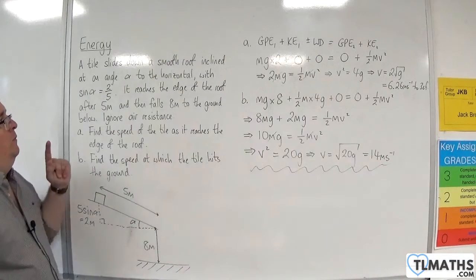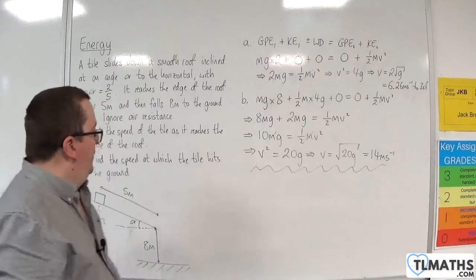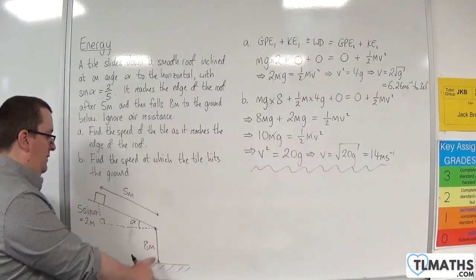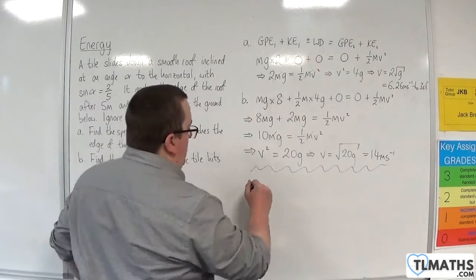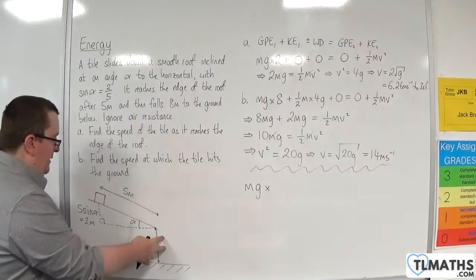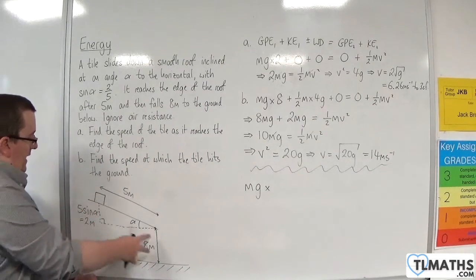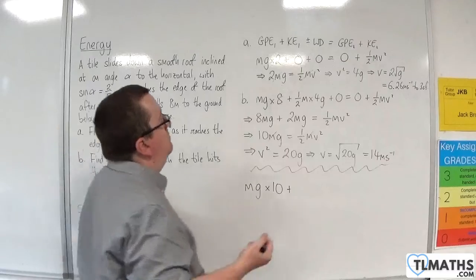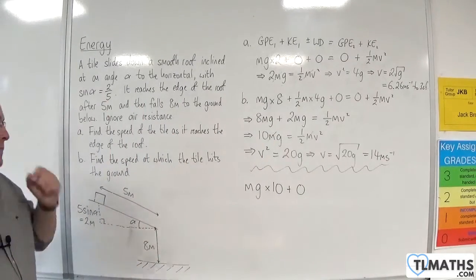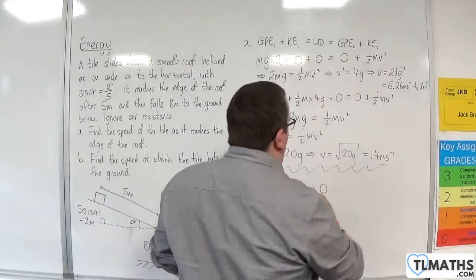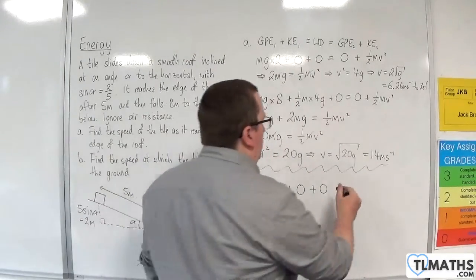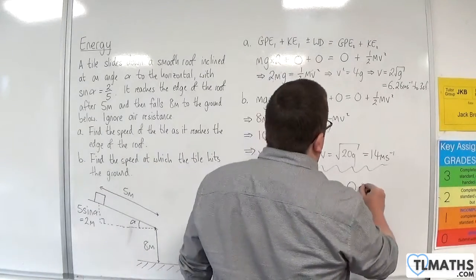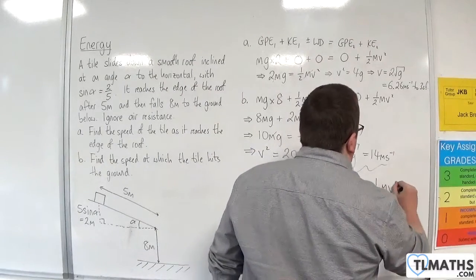Because if I use the work energy principle, the initial gravitational potential energy is going to be that height plus that height times mg. So I'm going to have mg times by 8 plus the 5 sine alpha. So 8 plus 2, which is 10. Now, the initial kinetic energy, assuming that we're starting from zero, with a velocity of zero, will be zero. Work done will be zero. The final gravitational potential energy, well, once it hits the ground, will be zero. And the final kinetic energy will be one-half mv squared.